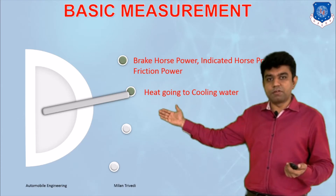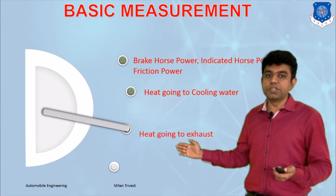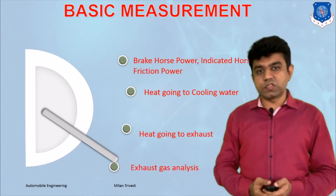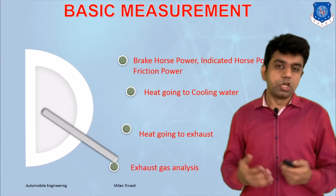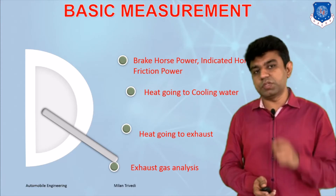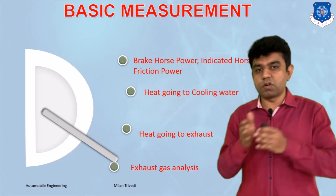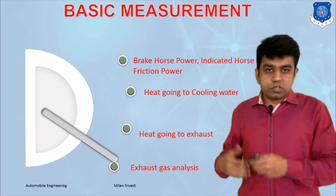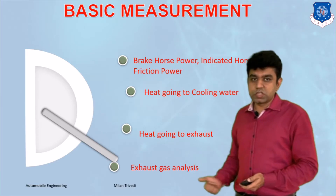Apart from that, we can measure heat going to the cooling water, heat going to the exhaust, and lastly exhaust gas analysis — where we discuss different test methods to find the amount of different gases present in the exhaust, such as the value of carbon monoxide and nitrogen oxides, measured with different kinds of exhaust gas analyzers.